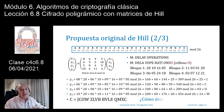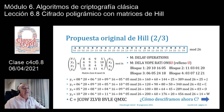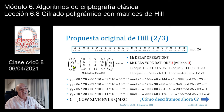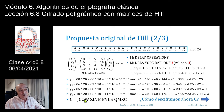Para descifrar, tomamos cada uno de los bloques de cuatro letras del texto cifrado y los multiplicamos por la matriz inversa. Si multiplicamos el texto en claro por la matriz clave para cifrar, para descifrar, conociendo Y1, Y2, Y3, Y4, tenemos que multiplicar por la matriz inversa — porque en matemáticas no se puede dividir por una matriz, pero sí multiplicar por su inversa.